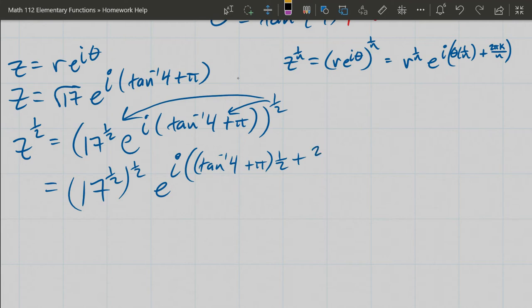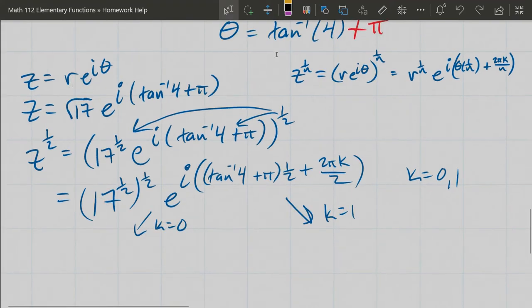Times 1/n - for us that's 1/2 - plus (2πk)/2, for k = 0 and 1.